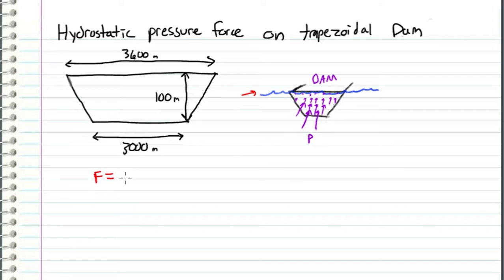We know that force equals pressure times area. However, since the depth changes, the pressure distribution changes. So instead, we will express this as an integral of p dA over the entire area of the trapezoid.